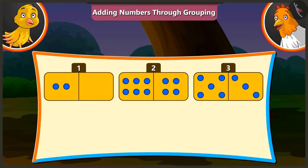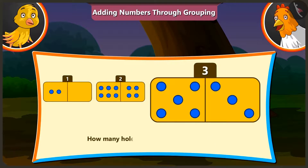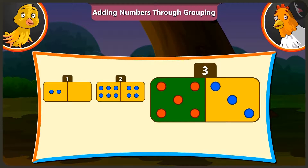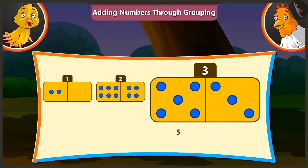Wow, Pilu! Now tell me the number of holes on the third card. The third card has 5 and 3 holes. If we add 3 to 5, we get 8 holes.